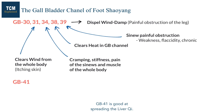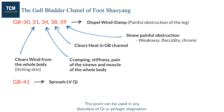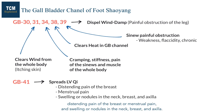GB41 is good at spreading the liver qi and can be used in any disorders of qi or phlegm stagnation. It can treat many signs and symptoms related to stagnation, especially distending pain of the breast or menstrual pain, and swelling or nodules in the neck, breast, and axilla.